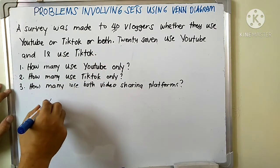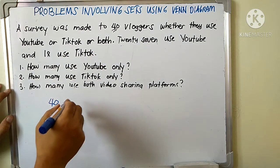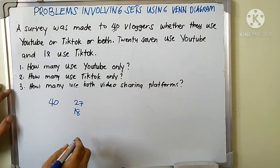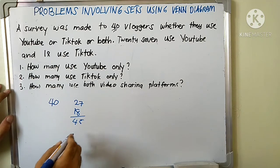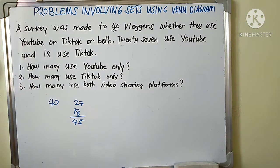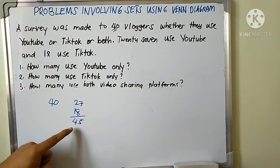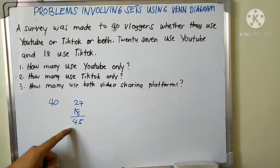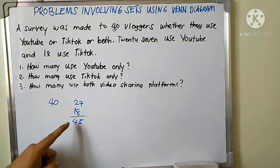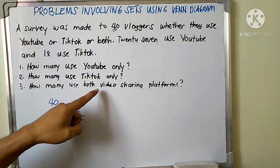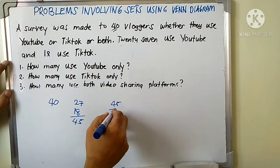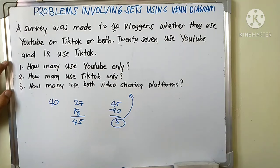We have 40 vloggers, 27 YouTube vloggers, and 18 TikTok users. Adding those gives 45, and you will say to yourself this number exceeds 40 — this should not be. The excess must account for those using both platforms. So 45 minus 40 equals 5; that is the answer for those using both.